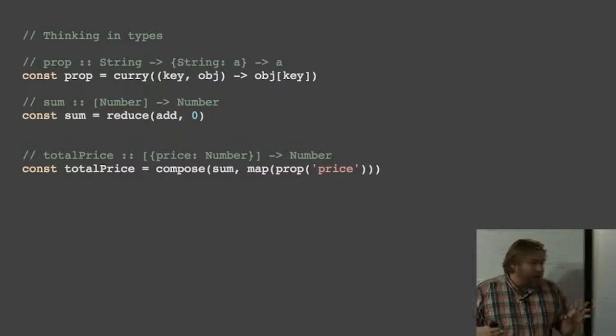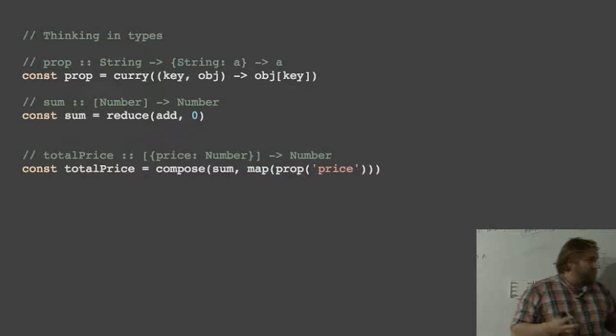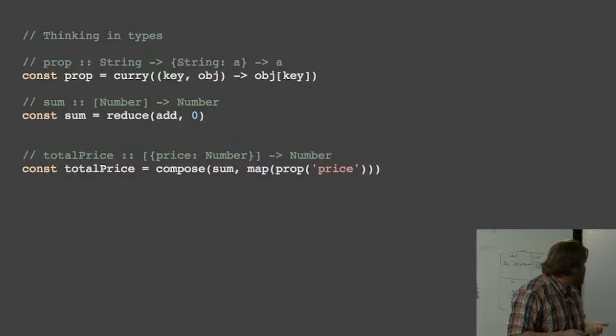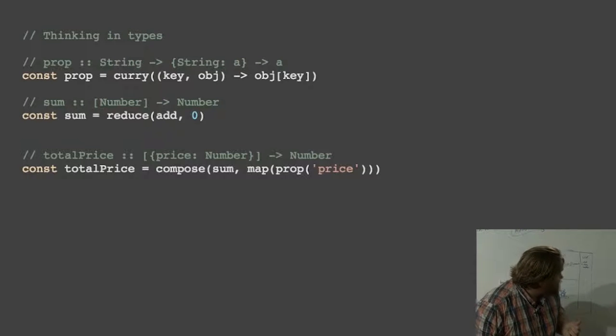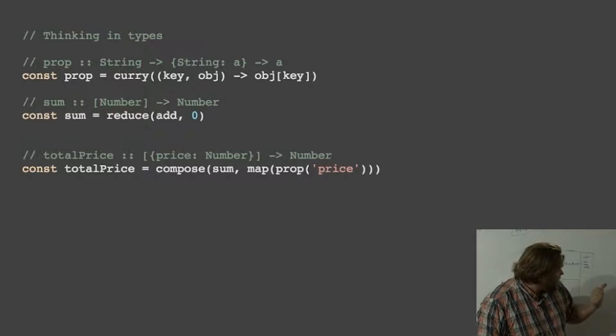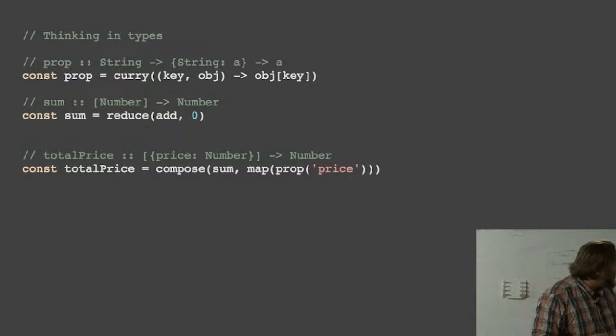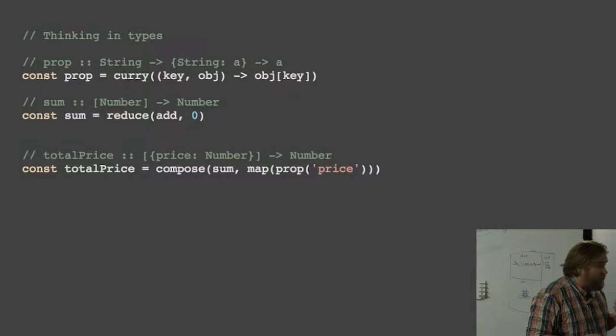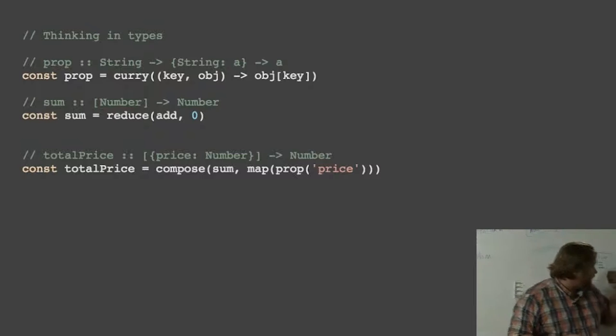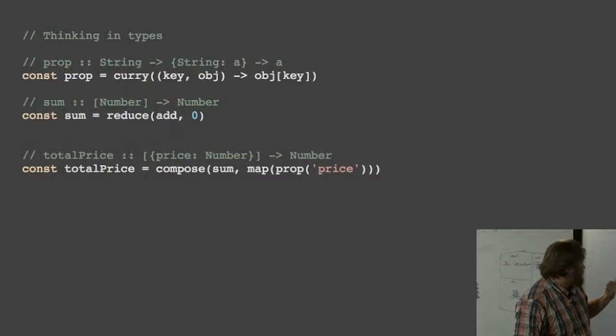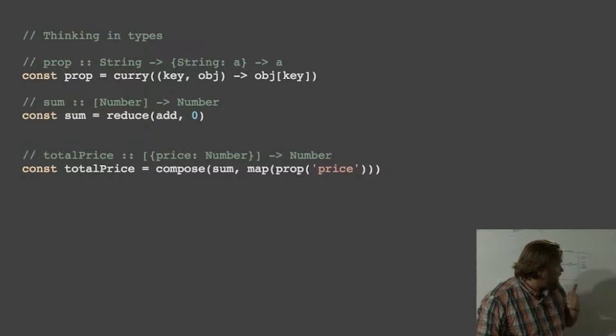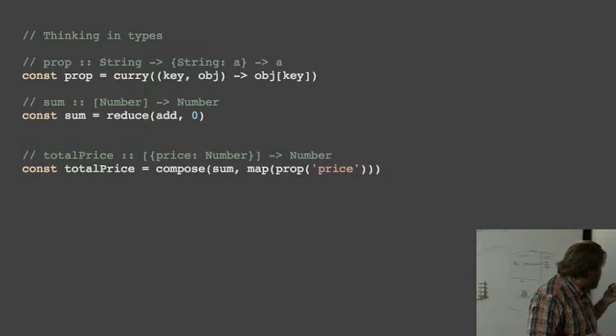So now that we've built a little bit of a library, now that we've got an idea of what it means to code in a functional way, let's take some examples of how we can use this. So I'm going to introduce two more generic functions. The first one's called prop. Initially, it seems very useless because all it does is access a property in an object. But because we can curry it, it gives us some fantastic power.